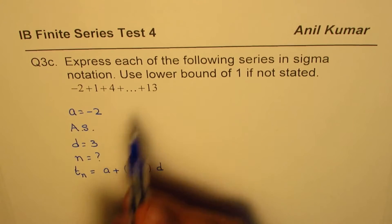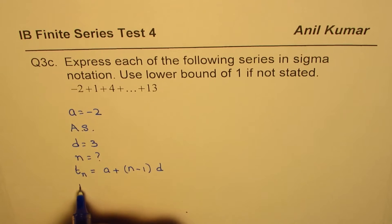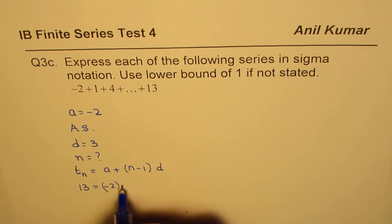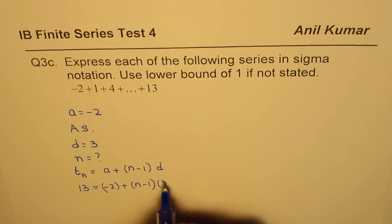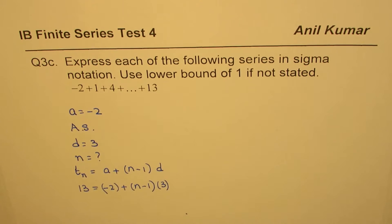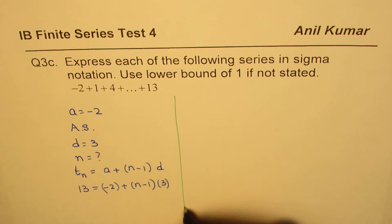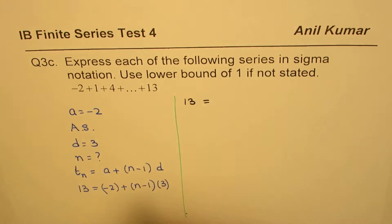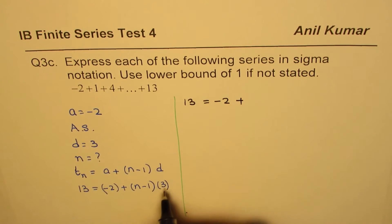So using this formula we can find: 13 in this series is which term? Let's calculate this. 13 we'll write as the nth term. a is -2 for us, plus (n-1), and d is 3 for us. So we'll solve this equation to find the value of n. What we have here is 13 equals to -2. We'll open this bracket plus 3n.